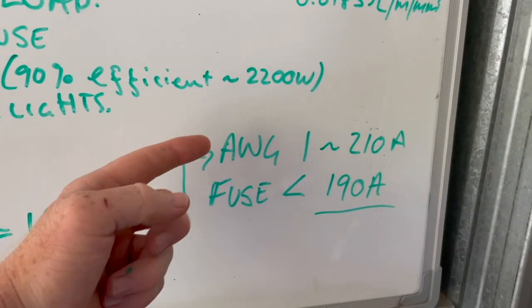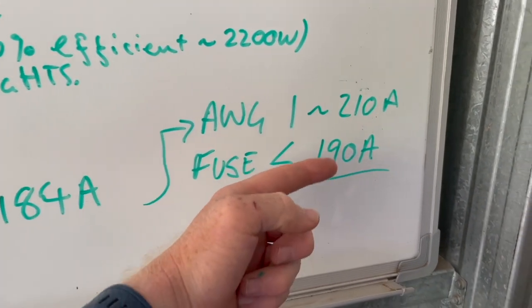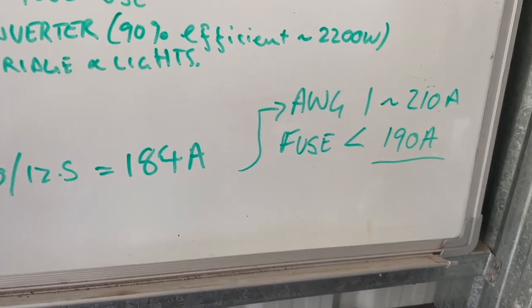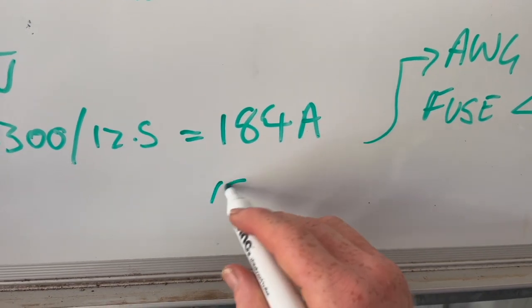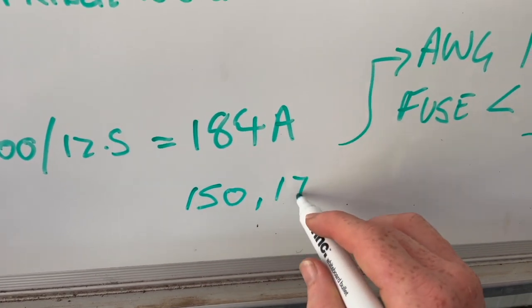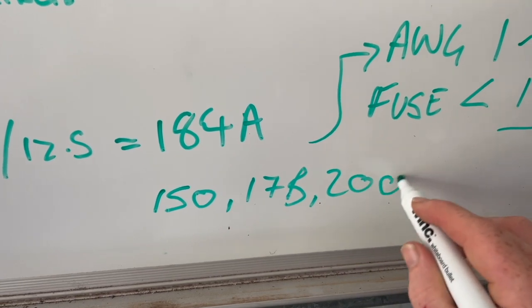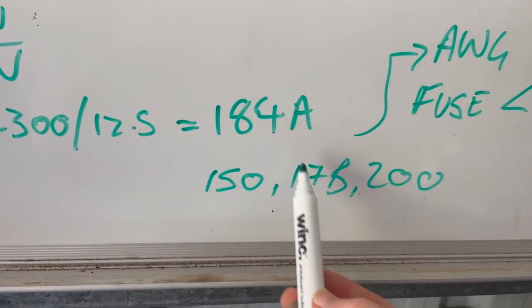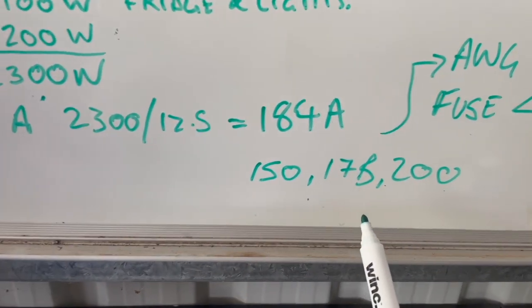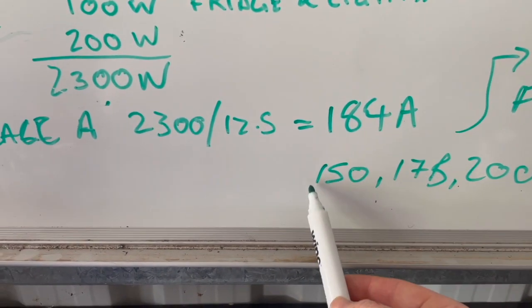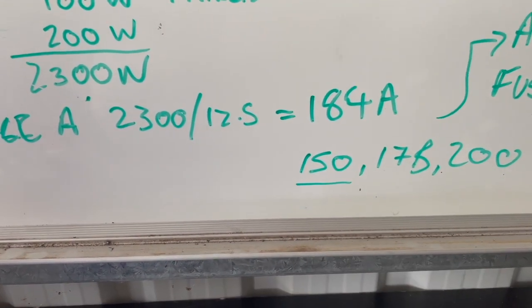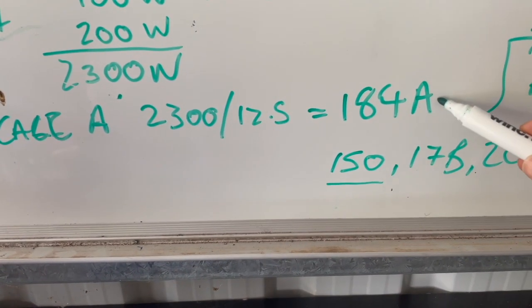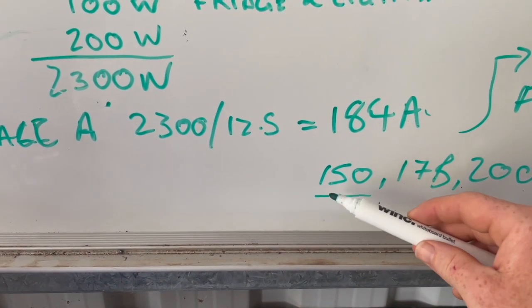So, AWG 1, 210 amp, our fuse should be less than 190 amp, which is an odd number, so you'd be using something like a mega fuse, they come in 150, 175, 200. A lot of people make the assumption that 175 amp, never going to be able to use that, because it'll just blow. That's not how fuses work, you have to look up their specifications. I went and had a look, a 150 amp mega fuse will run at 3000 seconds at 184 amps before it would blow. So it is more than enough capacity to run your system.